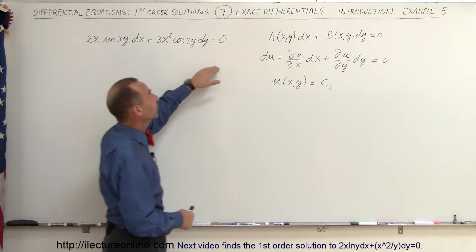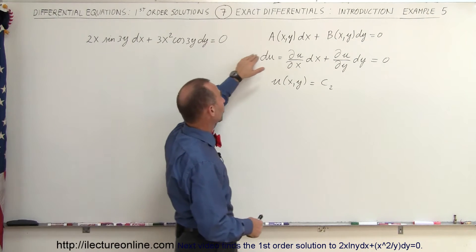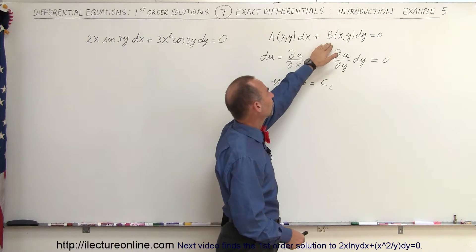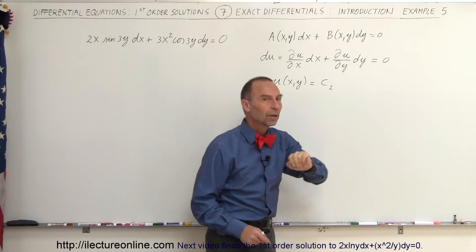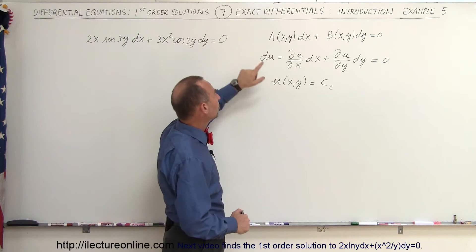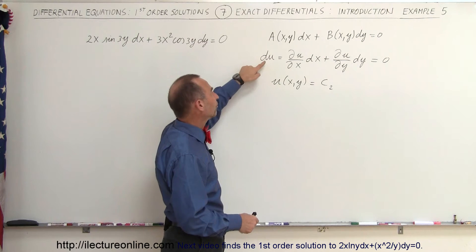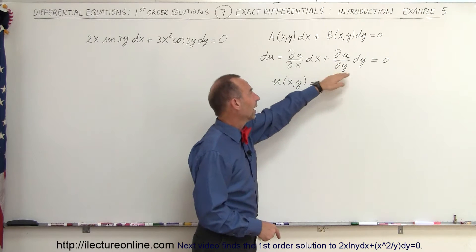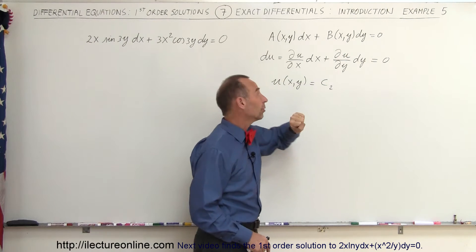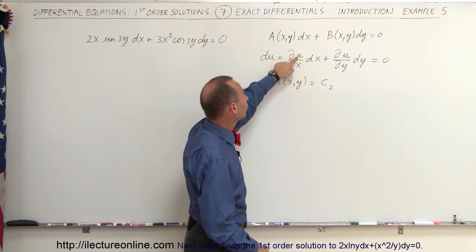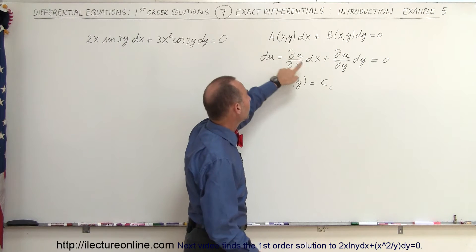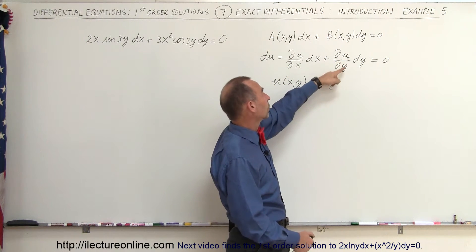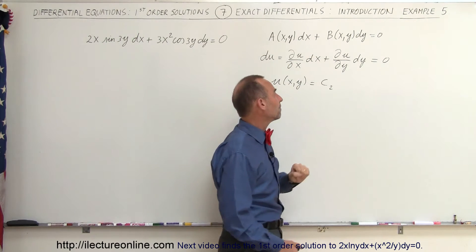The general format of an exact differential equation of the first order is that we have some function of x and y dx plus some other function of x and y dy equals zero. The general solution would be u such that du equals zero, meaning the partial of u with respect to x equals a, and the partial of u with respect to y equals b.